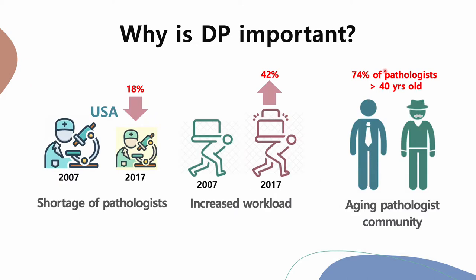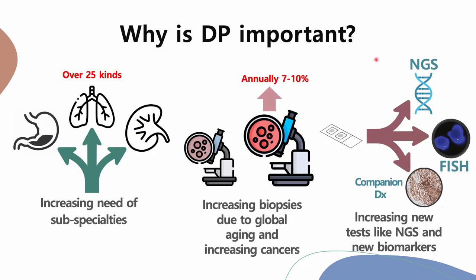So why is DP important? First, the number of pathologists is decreasing. In the USA over the last decade, the number of pathologists decreased by 18%, while the workload increased by 42%. The pathologist community is getting older, with almost 74% of pathologists now more than 40 years old. More and more expertise is needed in subspecialties because of global aging and increasing cancer burden, the number of biopsies is increasing 7–10% annually, and new technologies such as FISH, companion diagnosis, and NGS are appearing and increasing the workload burden.